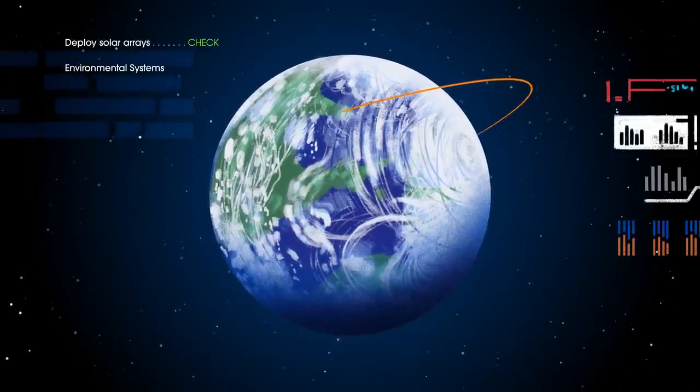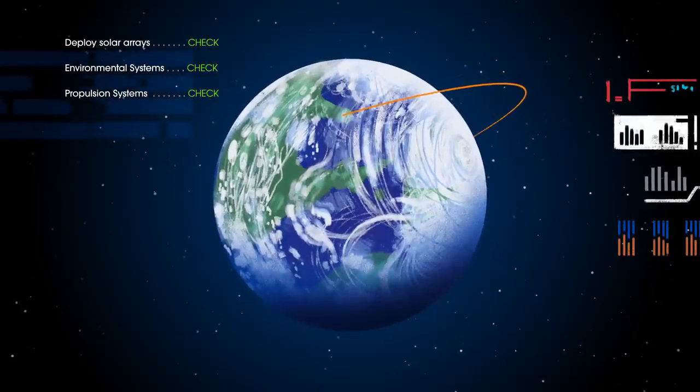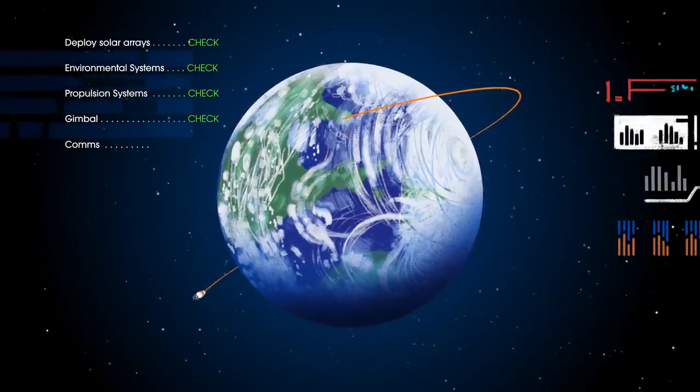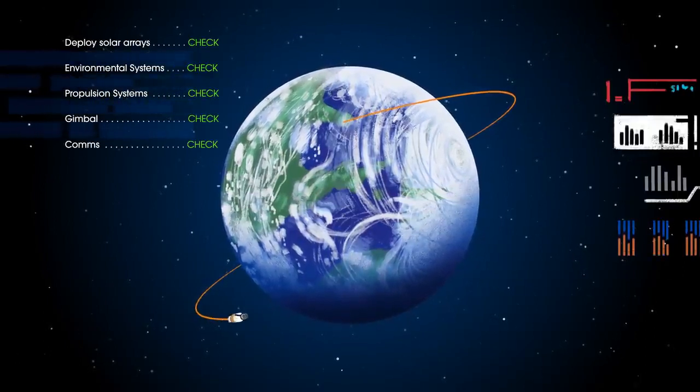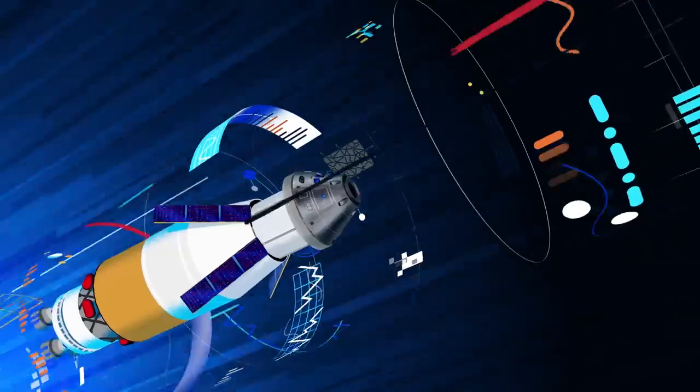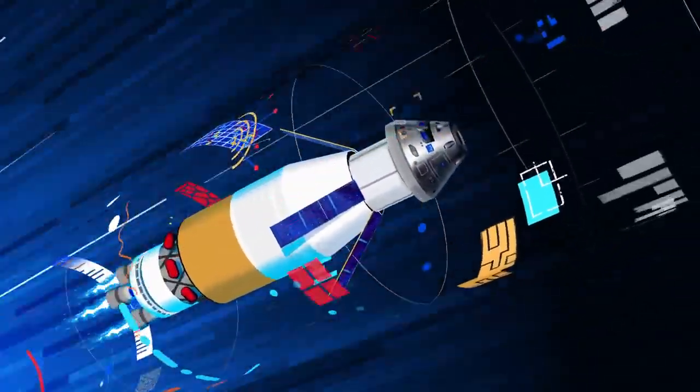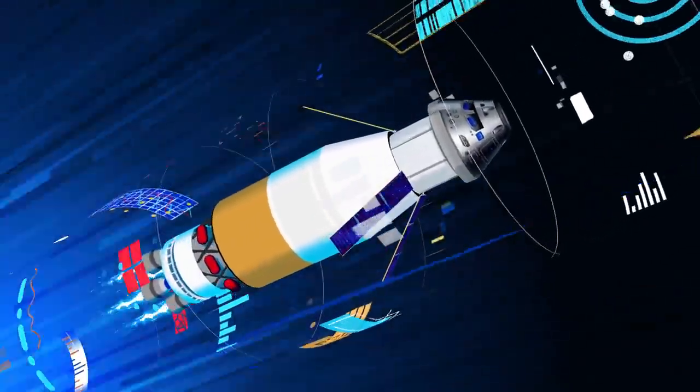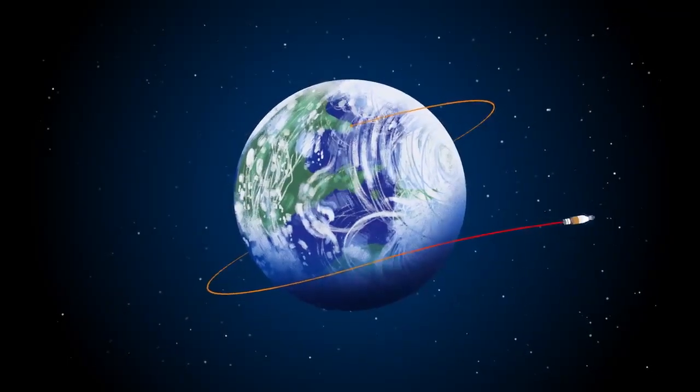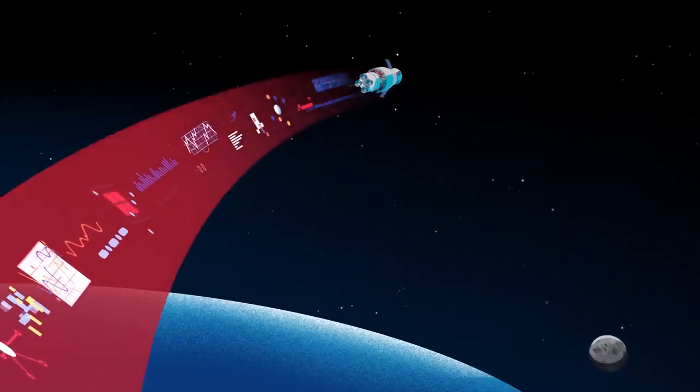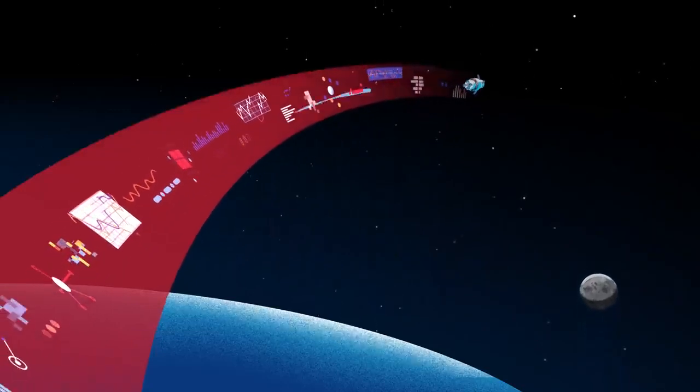Here, the crew reconfigure the spacecraft and check systems to confirm everything is ready for deep space travel. With a go from mission control, the crew reignite the exploration upper stage engines to leave Earth entirely. The exact timing of this maneuver is critical to reach a speed that can escape Earth's gravitational pull, but also put Orion on a course that will intersect the Moon days later.